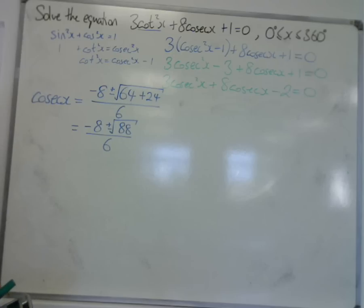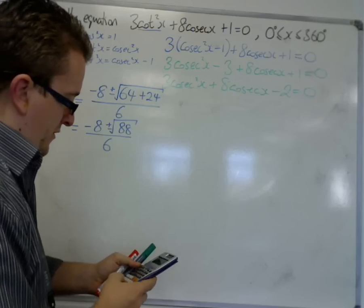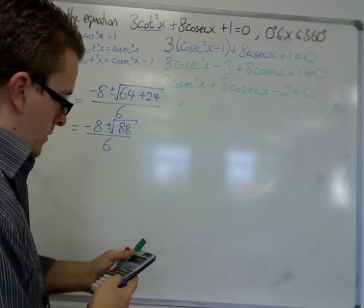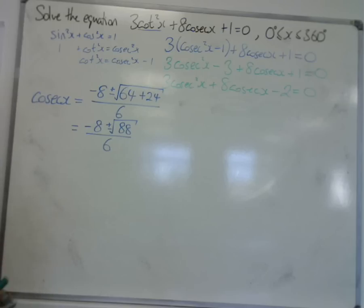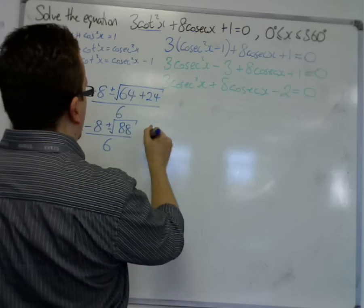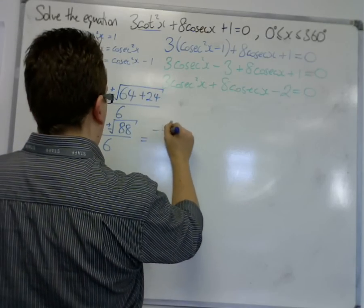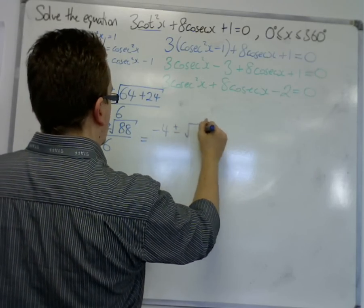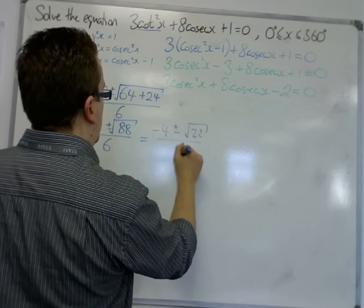Just checking to make sure we're all right on that. Don't want to make any silly errors. 3, 8, and -2. Yeah. So root 88 is 2√22, so this is (-4 ± √22)/3.